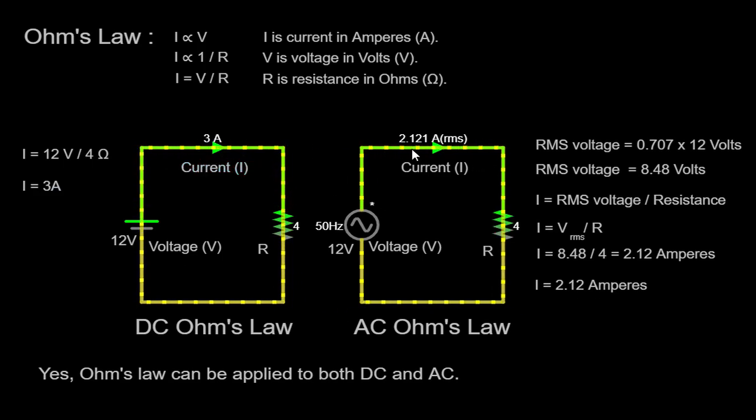Now, let's shift our focus to the AC circuit on the right. Unlike DC circuits, AC circuits involve voltage and current that continuously vary in magnitude and direction over time. However, the underlying principles of Ohm's law remain applicable to AC circuits as well. In an AC circuit, the voltage source produces alternating current that oscillates between positive and negative values, resulting in a sinusoidal waveform.